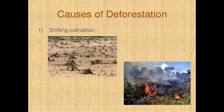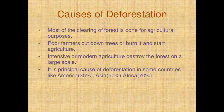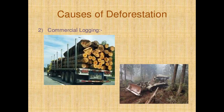Then, causes of deforestation. The main cause of deforestation is shifting cultivation. Shifting cultivation means most of the clearing of forest is done for agricultural purposes. Poor farmers cut down trees or burn them and start agriculture. Intensive or modern agriculture destroys the forest on a large scale. It is the principal cause of deforestation in some countries like America and Asia.